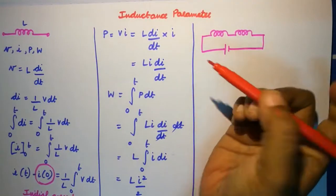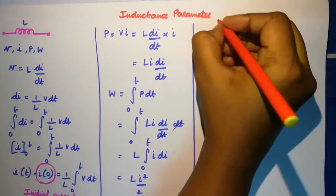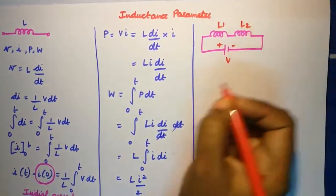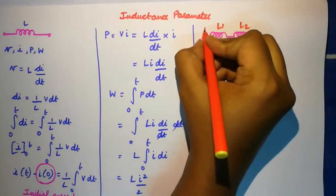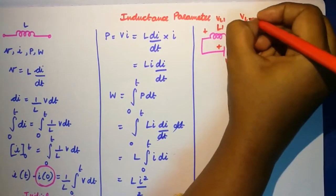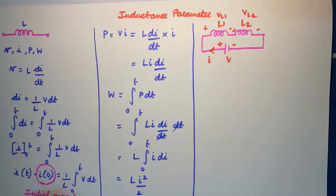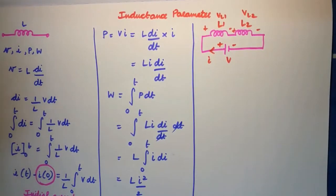Consider a voltage v given to two inductors L1 and L2. The voltage across the two inductors will be vL1 and vL2, and the current is going to be the same in a series circuit and I'm going to take it as i.